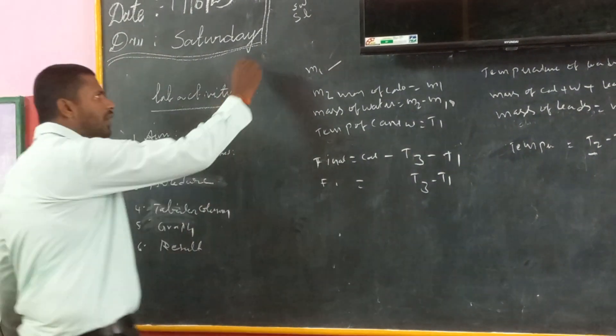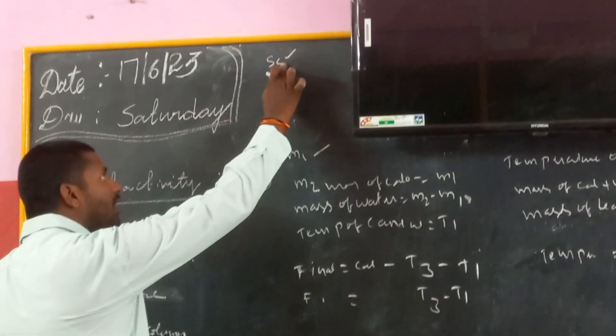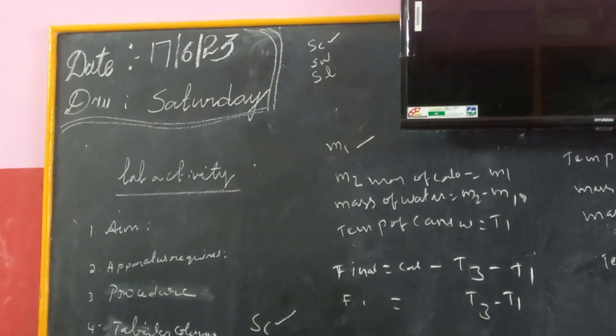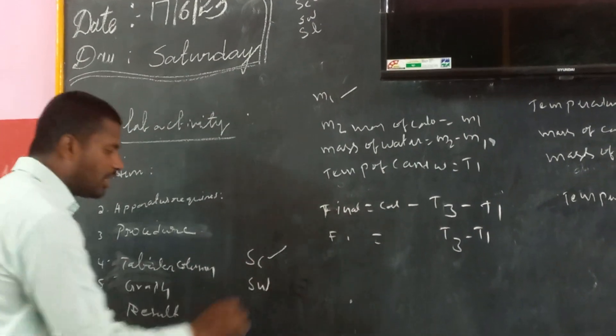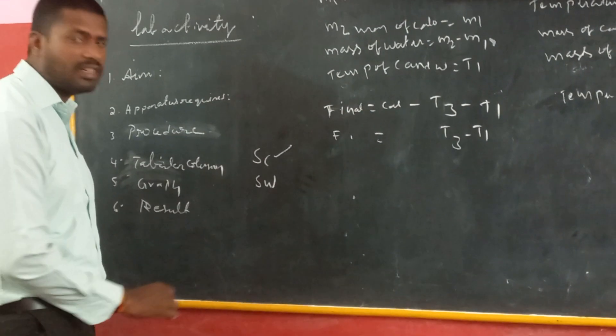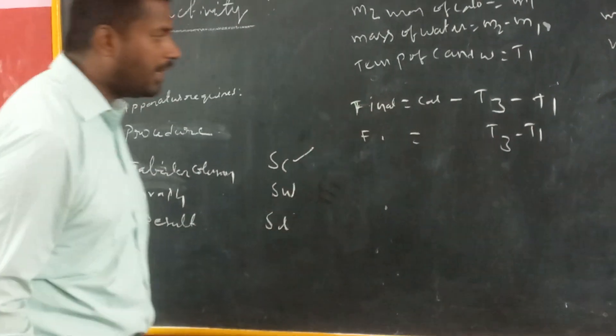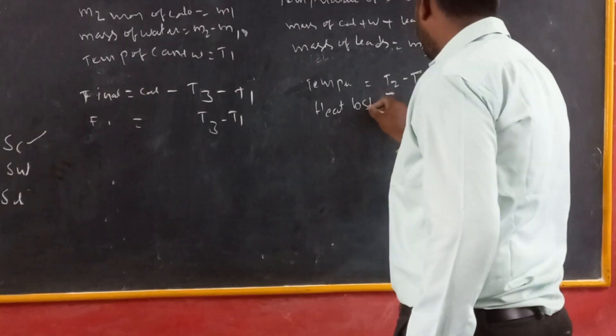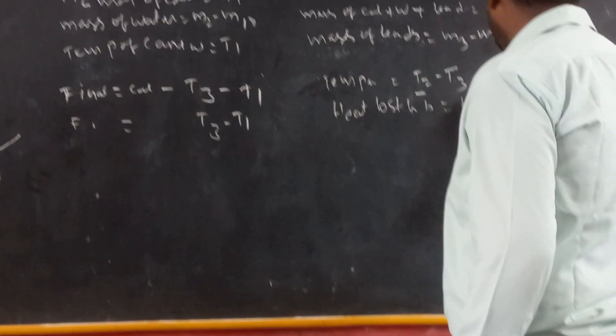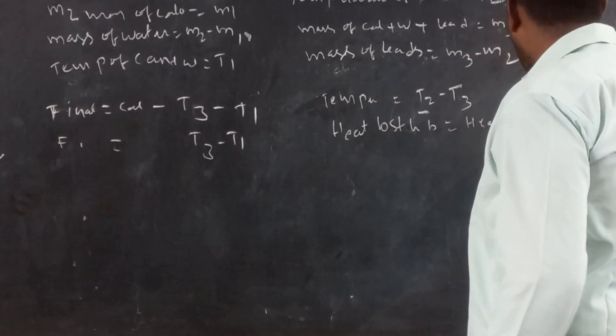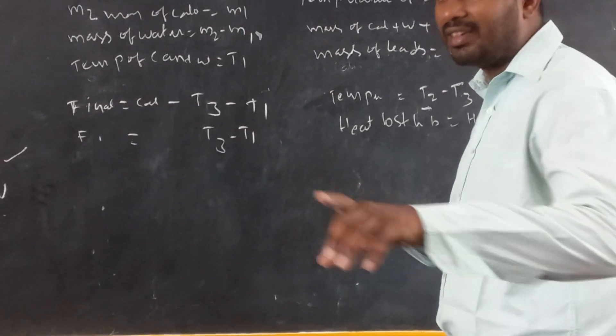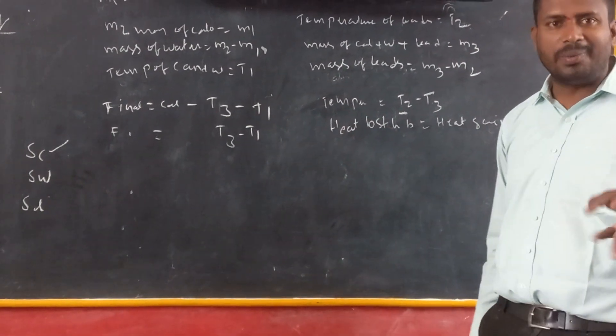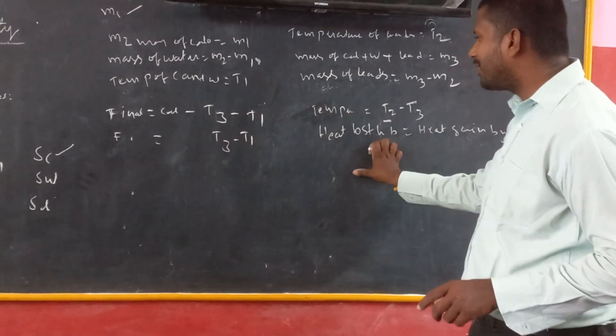Let the specific heat of calorimeter is SC. The specific heat of water is SW. The specific heat of lead shots is SL. Now, my dear students, we have a concept. Heat lost by hot body is equal to heat gain by cold body. Here, what is the hot body? Lead shots are a hot body. What are the cold bodies? Calorimeter and water are cold bodies.